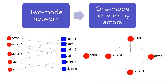To conduct a discourse network analysis, you can convert the two-mode network to a one-mode network by actors. In the two-mode network, the ties represent which actors made what claims. So in the one-mode network by actors, a tie connects a pair of actors if they made the same claim. The clusters in this one-mode network are sometimes called actor coalitions, based on the assumption that the actors shared the same belief of a policy. Therefore, they have the potential of becoming allies.